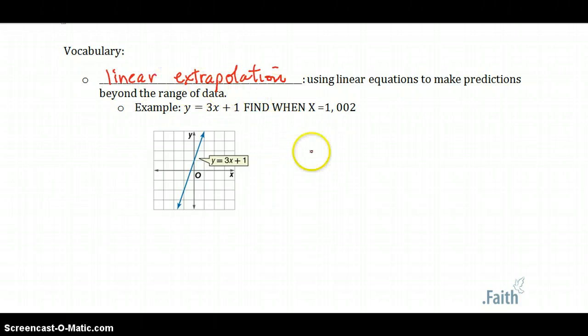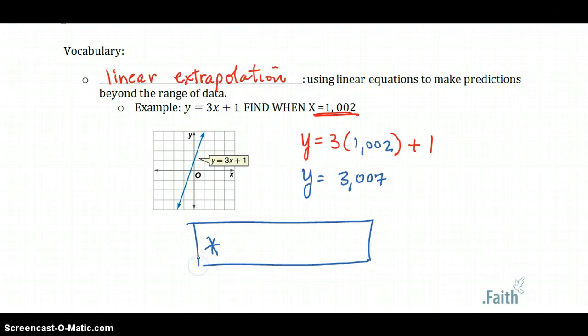But when they ask us to find when x is 1,002, that goes beyond this graph. But we can use linear extrapolation to figure that out. So since y equals 3x plus 1, and in place of x I am plugging in this new 1,002. So when you do that on your calculator, it will give you the prediction for what y should be. So that's 3,006 plus 1 would make 3,007. Is this proportional or non-proportional? Answer that question for me. I'm going to be checking to see if you know the answer tomorrow.